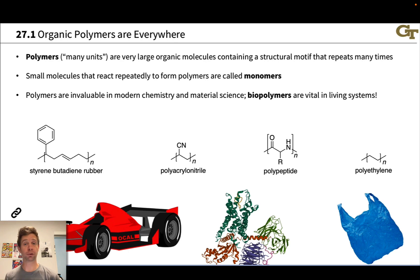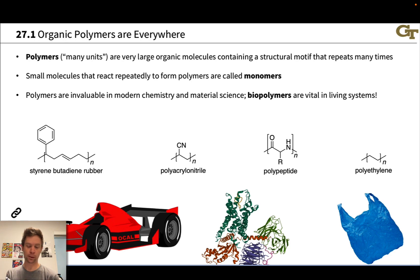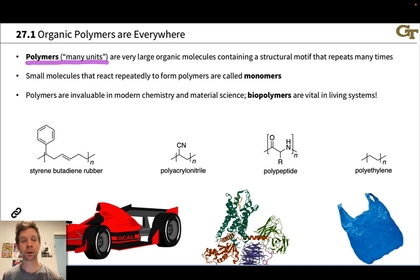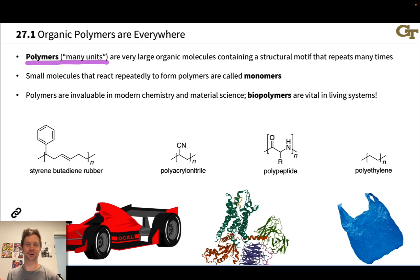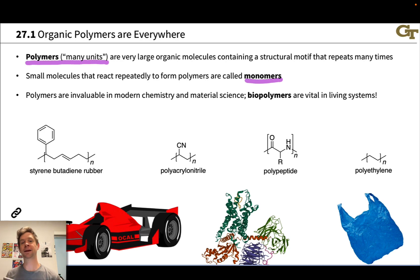Polymers are very large organic molecules containing a structural motif called a repeating unit that repeats many times. The word polymer comes from the Greek for 'many units,' evoking the idea that the same molecular structure is repeated many, many times. Repeating units are linked to one another via covalent bonds. The small molecules that react repeatedly to build the polymer — the individual Lego pieces — are known as monomers, the 'mono' prefix indicating one molecule in the long repeating polymer chain.